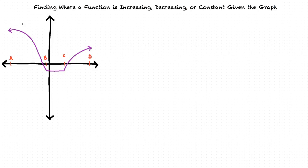If we trace the graph between A and B, we can see that as we move from left to right, the graph is falling between these two points, so we know that the function is decreasing between A and B.